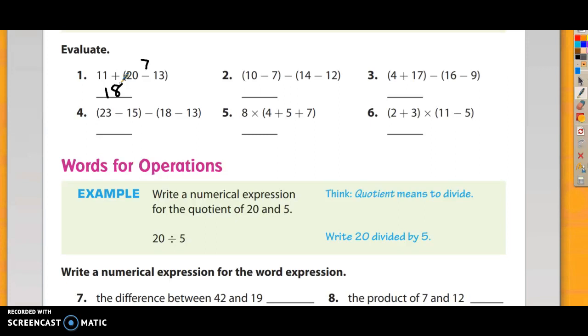Alright, number two. We're going to perform this operation first. 10 minus 7, that's 3. And then this operation, 14 minus 12, that's 2. And then 3 minus 2 is 1. Number three, I'm going to do 4 plus 17, that's 21. And 16 minus 9, that's 7. And 21 minus 7, that's 14.